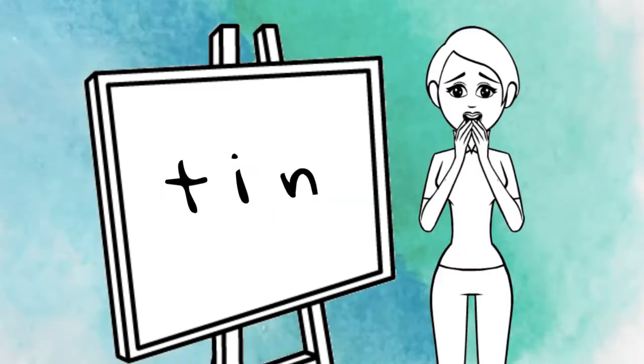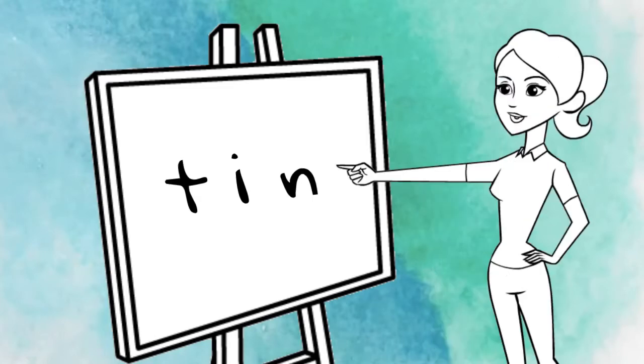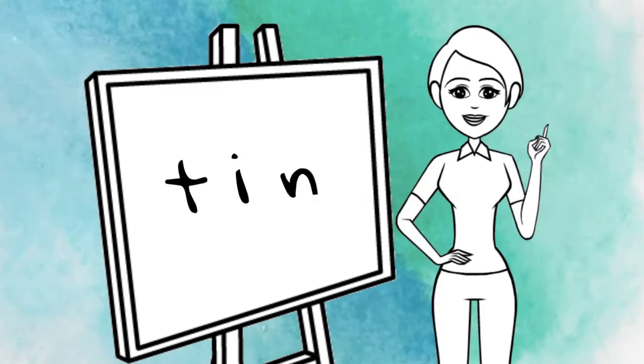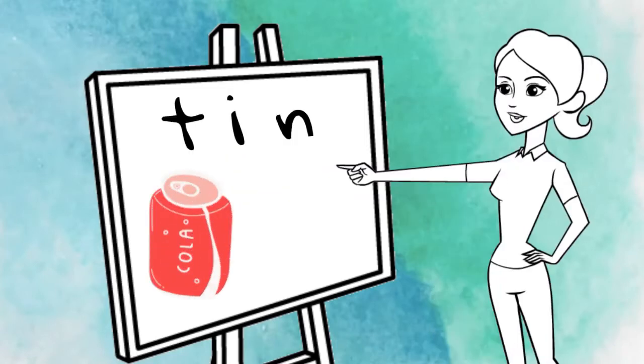Oh no, this word looks so tricky. It has three letters. Hold on a second, look here, it has the I-N that we just learned. So we know that already. So if I-N says 'in' and T says 't', what does this word say? It says 'tin', as in tin can.